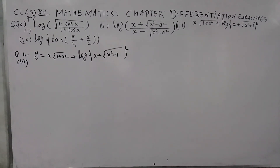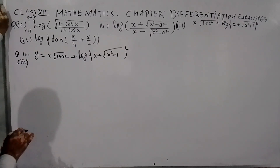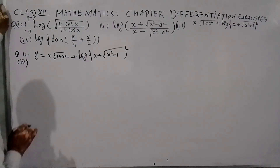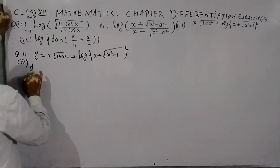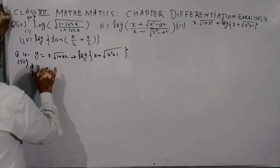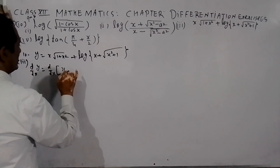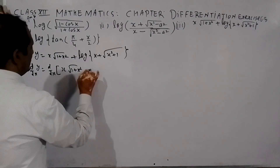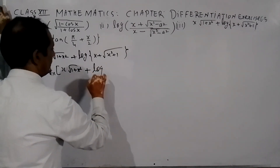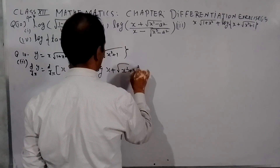Let me say, y is equal to x root 1 plus x square plus log of x plus root x square plus 1. So, d by dx of y is equal to d by dx of x root 1 plus x square plus log of x plus root x square plus 1.